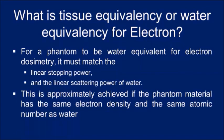For a phantom to be water equivalent for electron dosimetry, it should have the same linear stopping power and linear scattering power as water. This is approximately achieved if the phantom material has the same electron density and atomic number as water. If a material matches these properties, it can be used as a phantom for electron beam measurement.